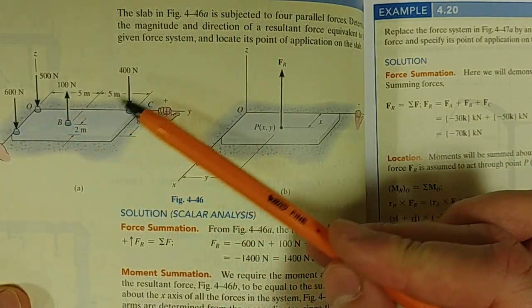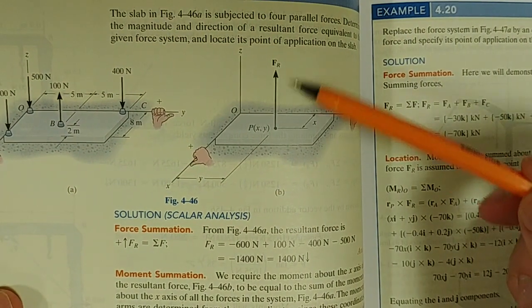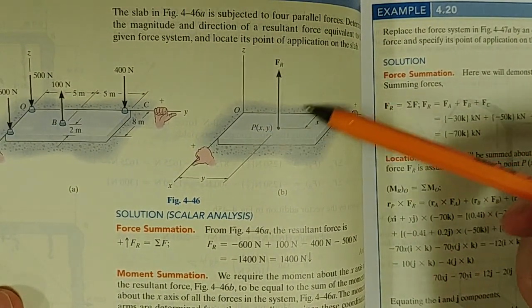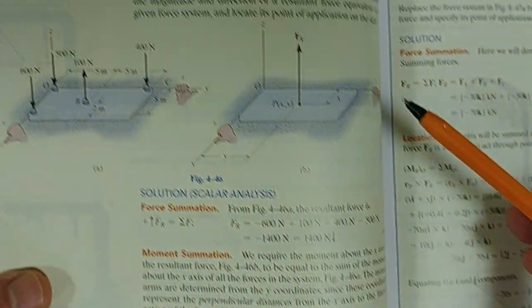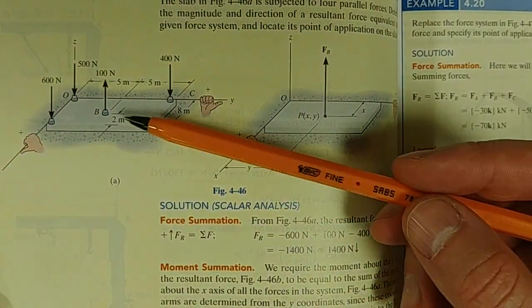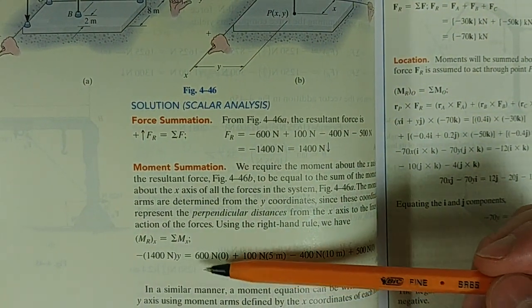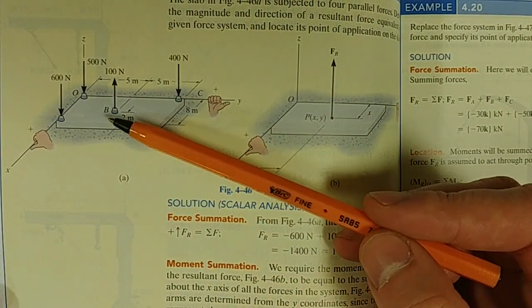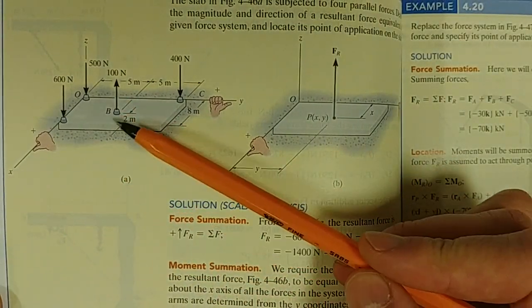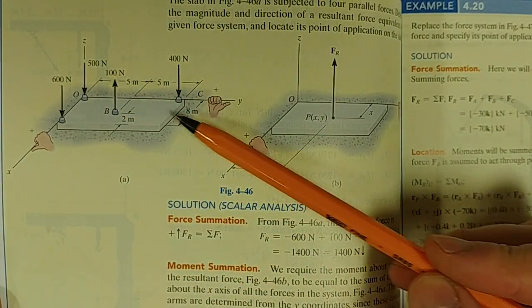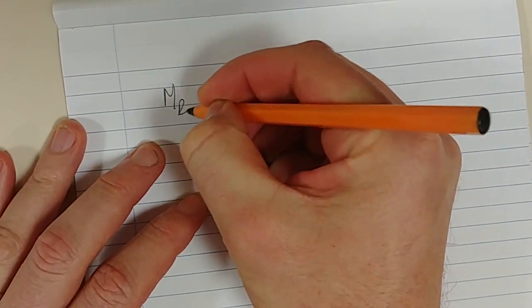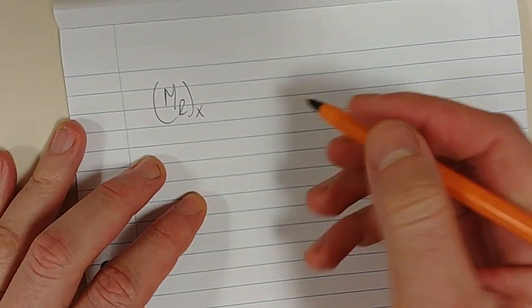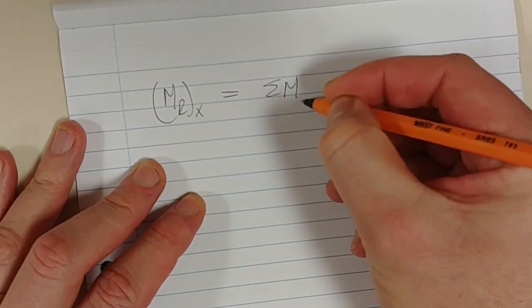We add up all the forces and place it somewhere on the body. Then we need to determine where that force acts in relation to the X axis and in relation to the Y axis. The part that's tricky for everyone is: how do I know if my moments are positive or negative? In this case, we are taking moments about an axis — we take moments about the X axis, and then we take moments about the Y axis. The resultant moment about the X axis is equal to the sum of all the moments about the X axis.